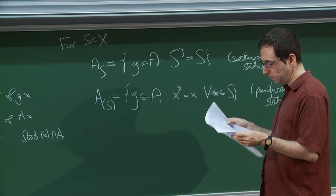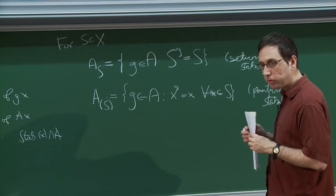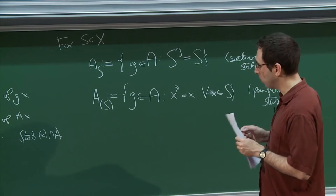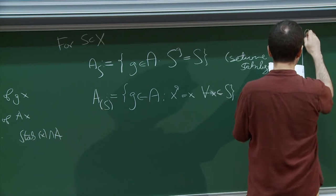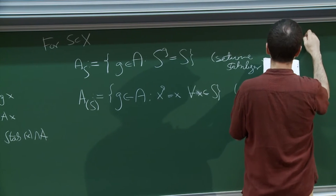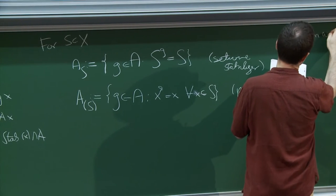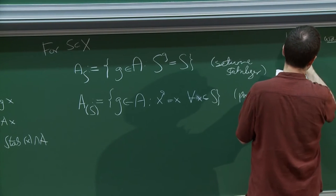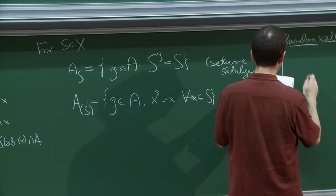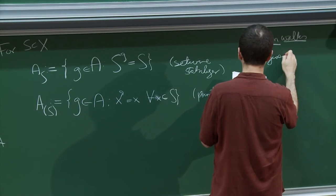In the case of the action of a group on itself, the set-wise stabilizer is a normalizer, and the point-wise stabilizer is a centralizer. Let me talk a bit about random walks, which are exactly what they sound like — you walk on a graph taking a random decision at each step.